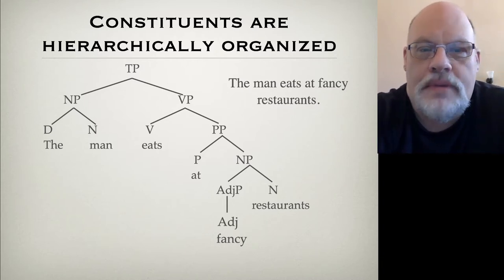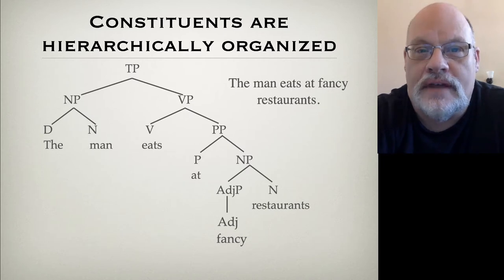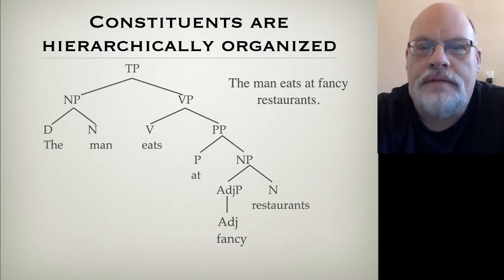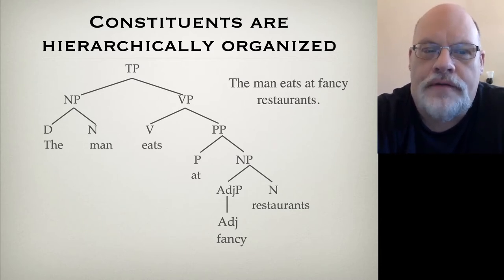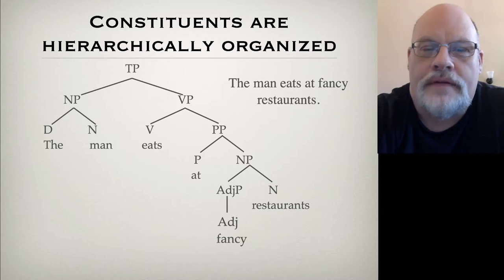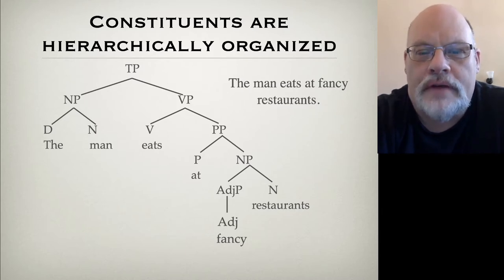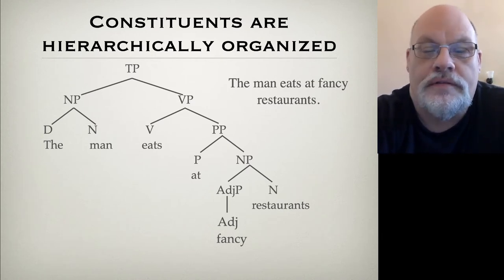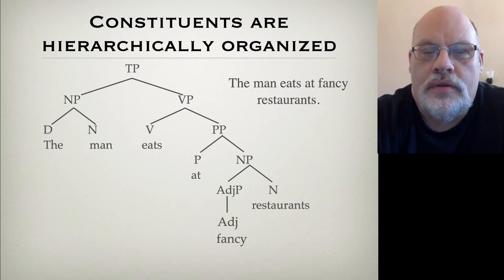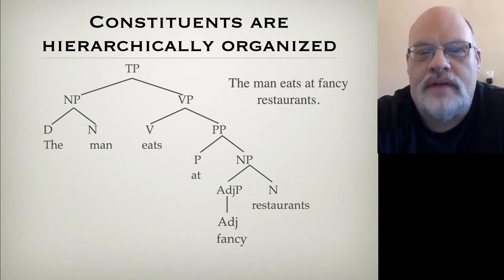At the very top, we have a TP. TP stands for tense phrase, but it's the same thing as a sentence. TP usually consists of a subject noun phrase — that's the noun phrase on the left — and a verb phrase. In this sentence, the noun phrase consists of a determiner and a noun. The verb phrase has two bits as well: it has the verb, and it has a prepositional phrase. The prepositional phrase consists of a preposition and a noun phrase, and the noun phrase consists of an adjective phrase and a noun. The adjective phrase just has an adjective in it. This structure is hierarchically organized — there are constituents inside of constituents inside of constituents.